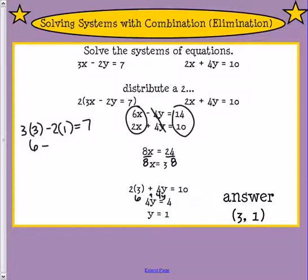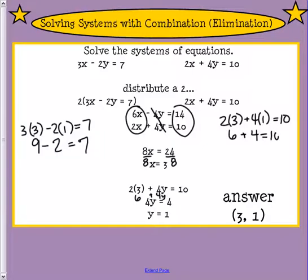So we get 9 minus 2 equaling 7. All right, let's look at another one. So let's plug in 3 for x plus 4 times 1 equaling 10. So 2 times 3 would not be 5 because we're not adding, right? That's 6 plus 4 equals 10 and it works. So both of these check.